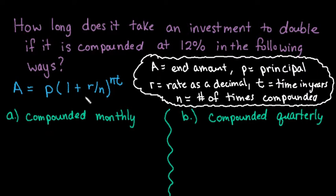I included the compound interest formula just in case you've forgotten it. It is A equals P times 1 plus r divided by n to the nt, where A represents the ending amount, P is the principal or starting amount, r is the rate as a decimal, t is time in years, and n is the number of times it is compounded per year.